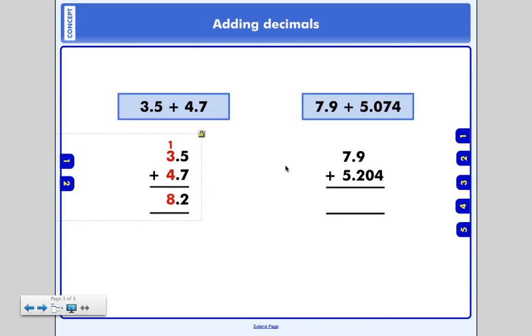Let's take a look at example number 2. Again, make sure you're copying these into your notes. Okay, well, step 1, I need to make an estimate. 7 and 9 tenths. I'm going to round that to 8. Plus 5 and 74 thousandths. I'm going to round that to 5. If I follow my rounding rules.